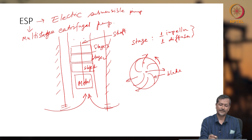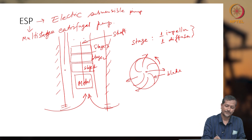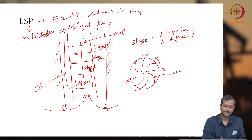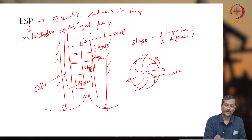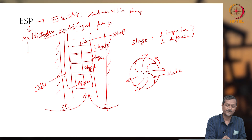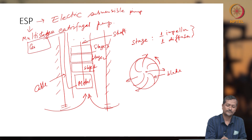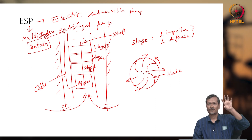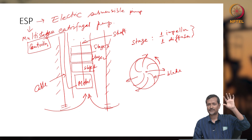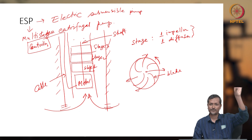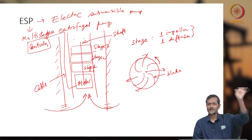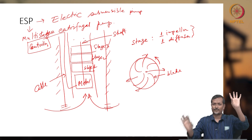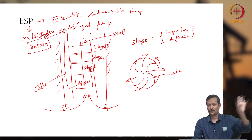To run this system, you need electricity. Electricity will come to the motor via a cable from surface. On the surface, there will be a pump controller, because electrical frequency is also controlled from the surface. The surface footprint is negligible — only a control panel, which may even be in a control room.